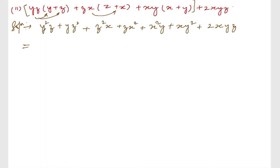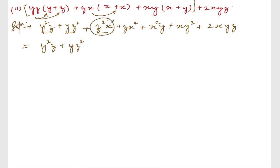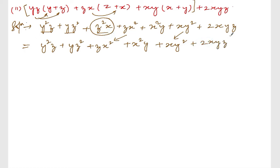Now let me rearrange these terms. I'll write: y²z + yz² + zx² + x²y + xy² + 2xyz. Also writing z²x at the end. I'll tell you what I'm going to do here.